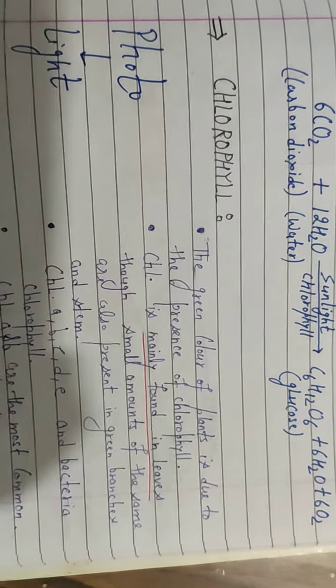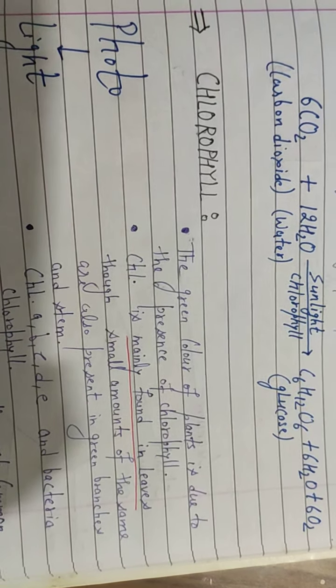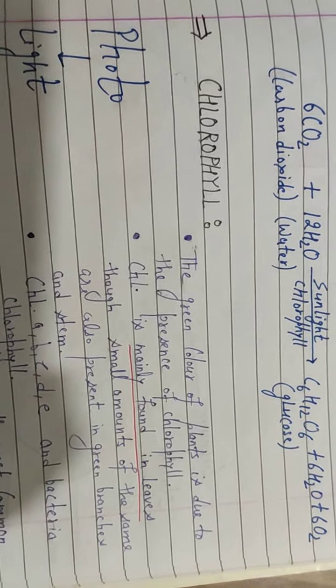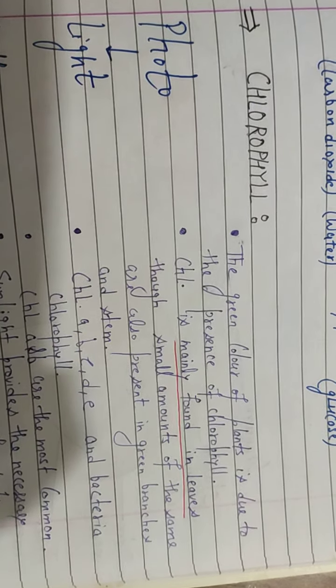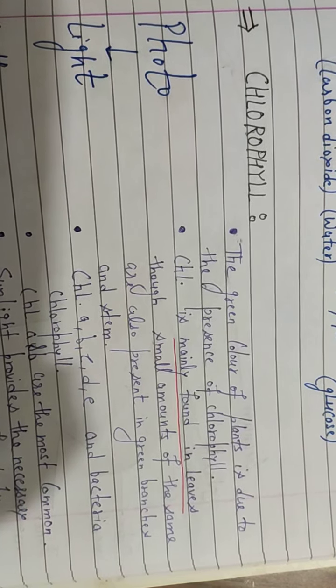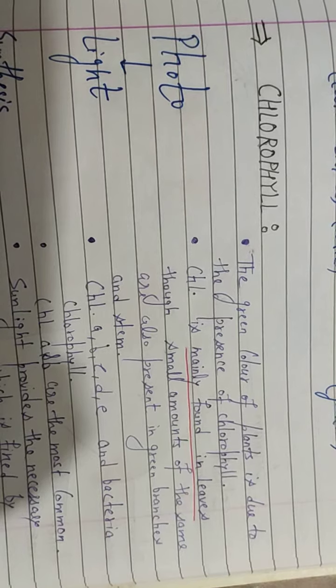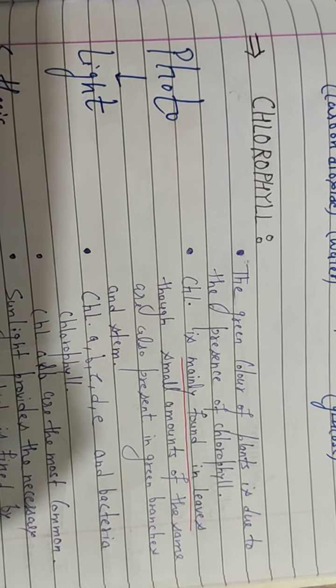Now, chlorophyll. The green color of plants is due to the presence of chlorophyll. Chlorophyll is mainly present in leaves, but some amount is present in green branches and stems. Chlorophyll is of five types: chlorophyll a, b, c, d, and e, and also bacteriochlorophyll which is present in autotrophic bacteria.